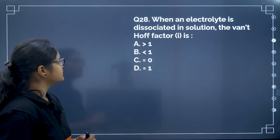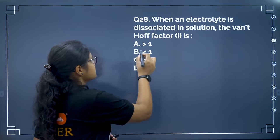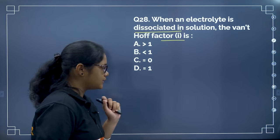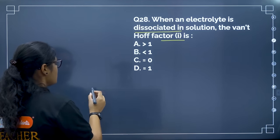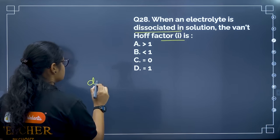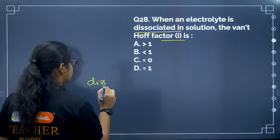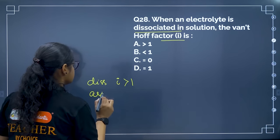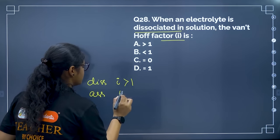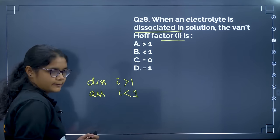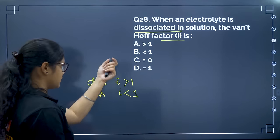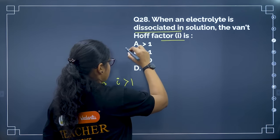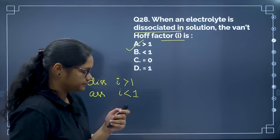When an electrolyte dissociates in solution, the Van't Hoff factor i is greater than 1, because dissociation increases the number of particles. Whenever dissociation occurs i > 1, and whenever association occurs i < 1. Correct answer is option E — greater than 1.